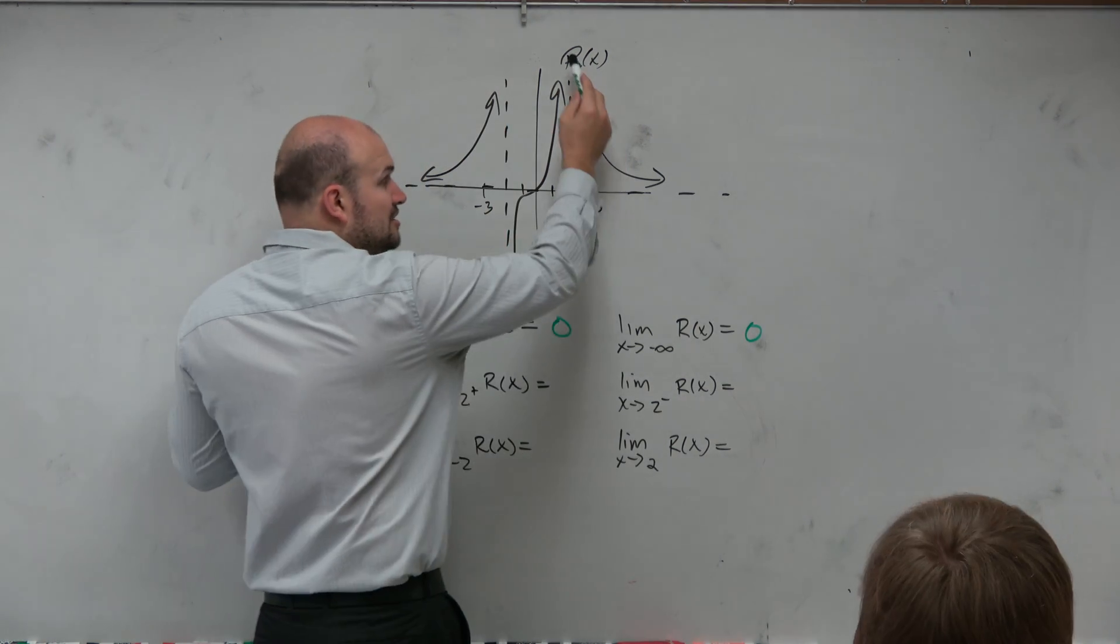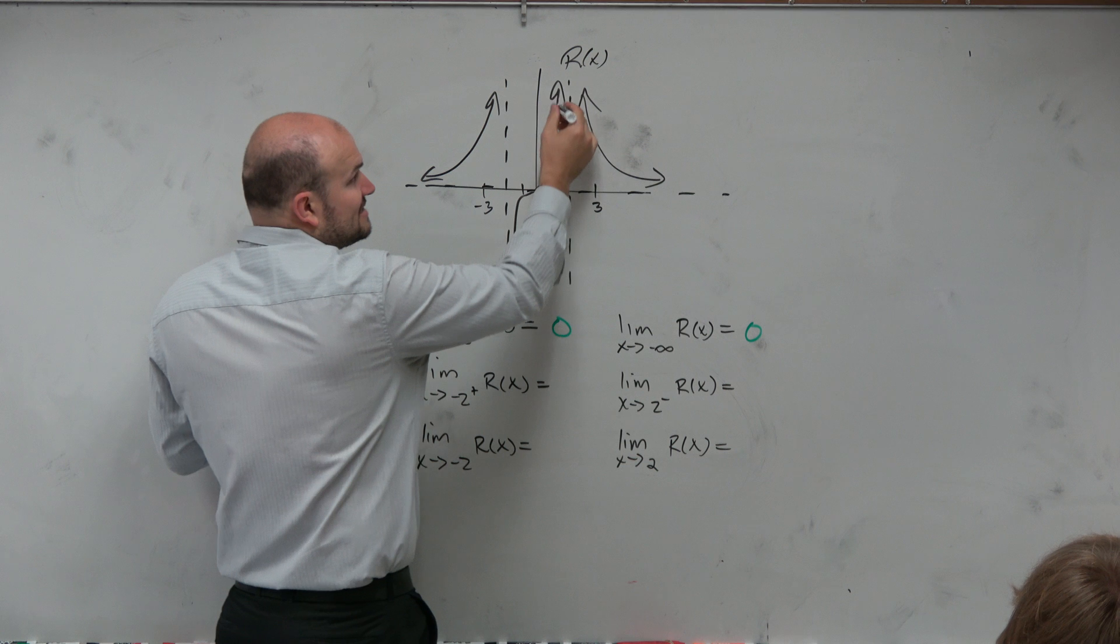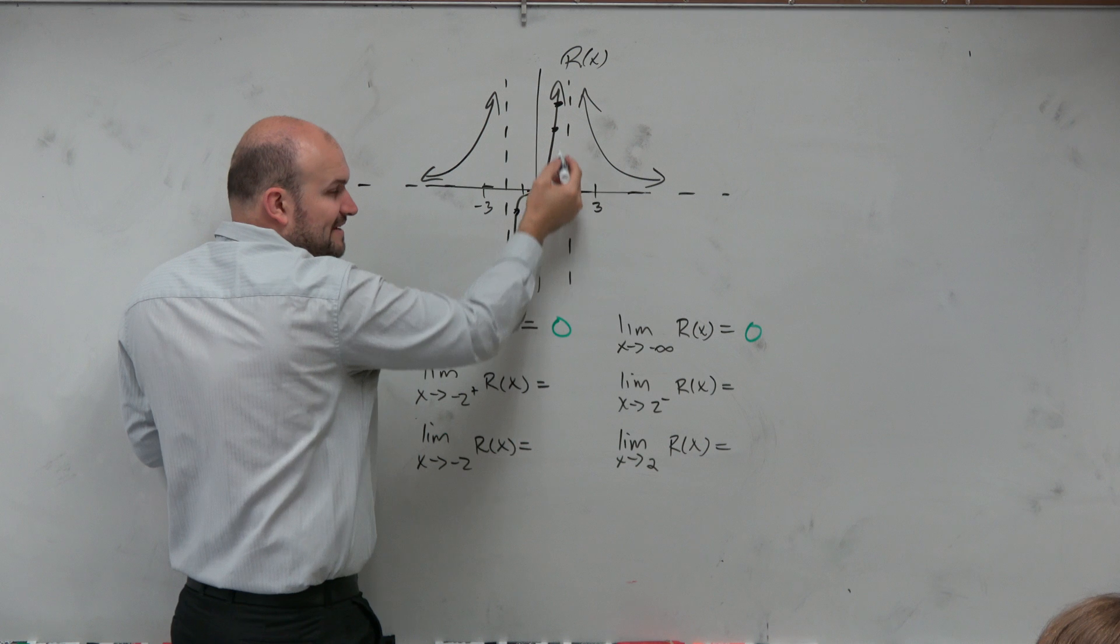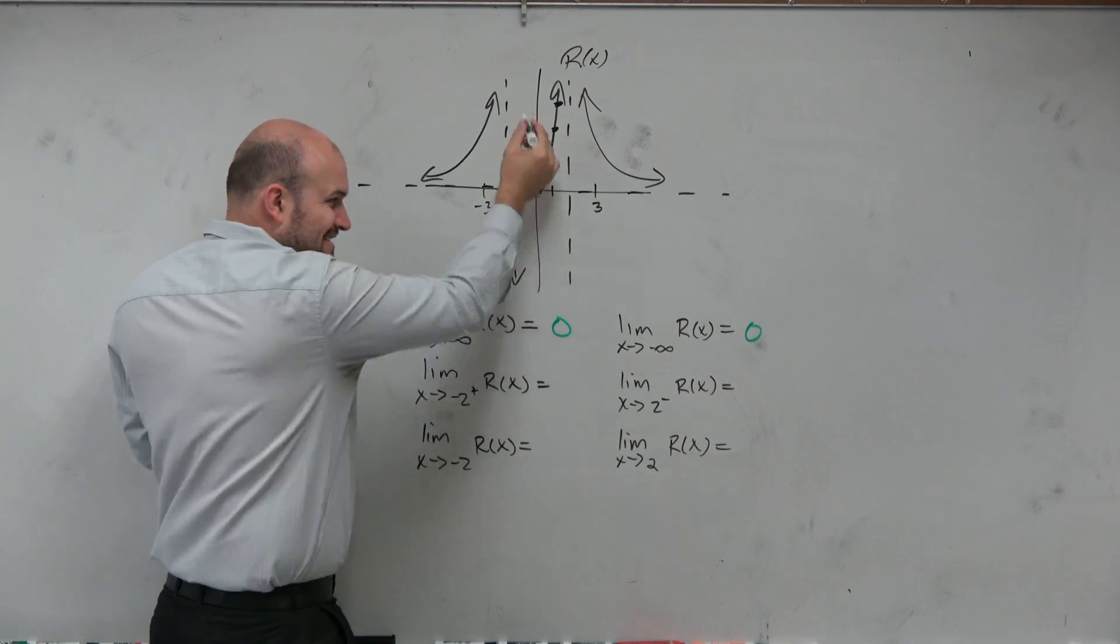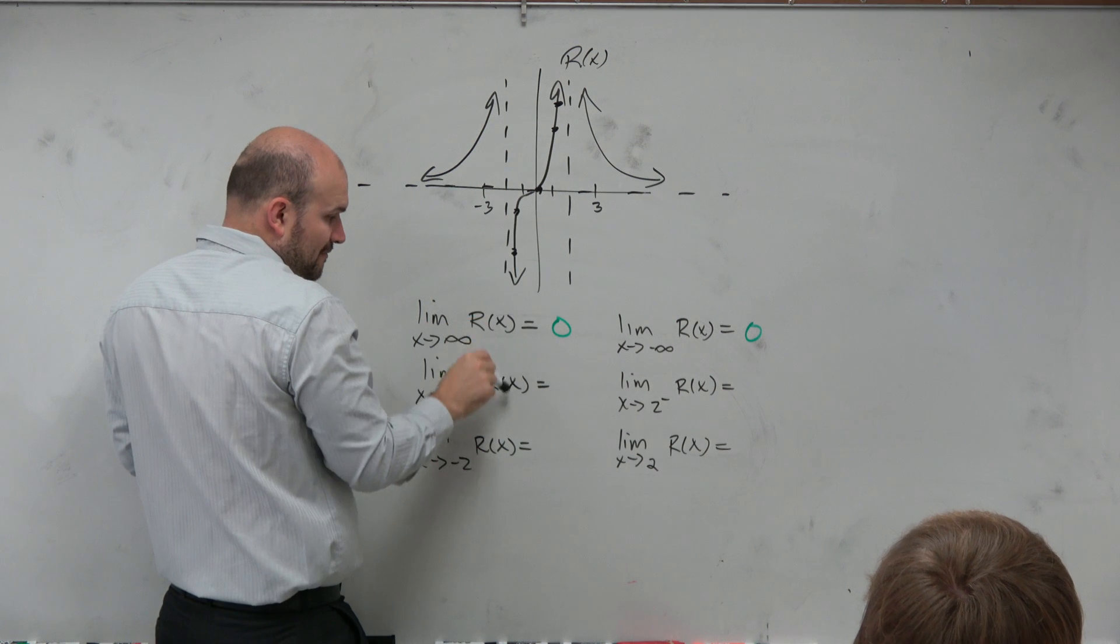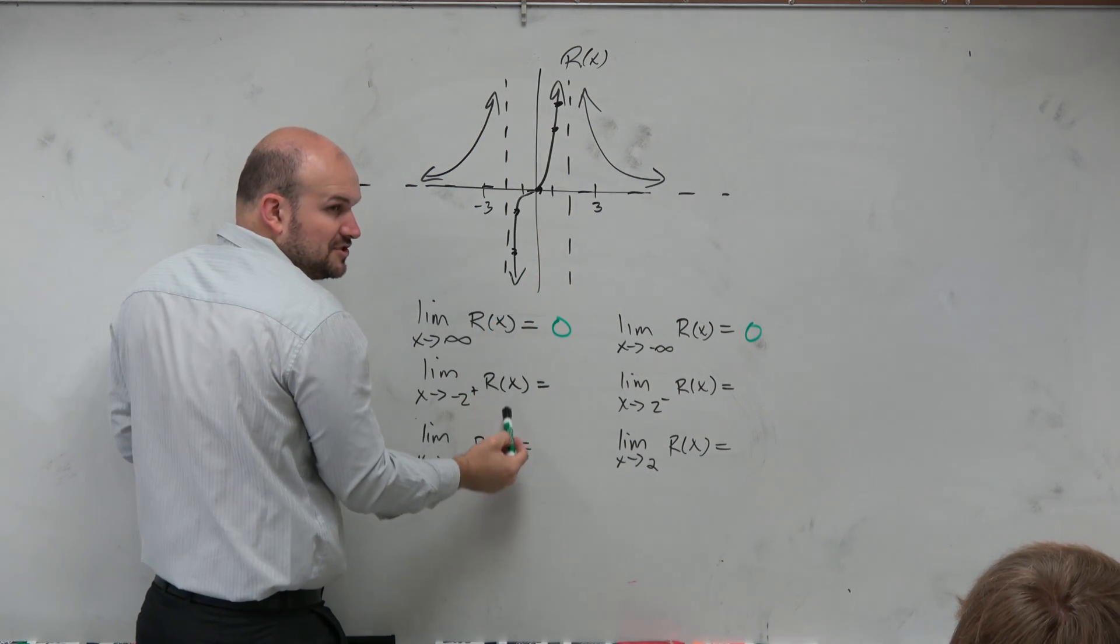So we look at negative 2 here. So from the right, as my values are getting closer and closer to negative 2, what f of x value am I kind of approaching? As I'm getting really close to it, what is my r of x value? I'm sorry, what is r of x getting really close to?